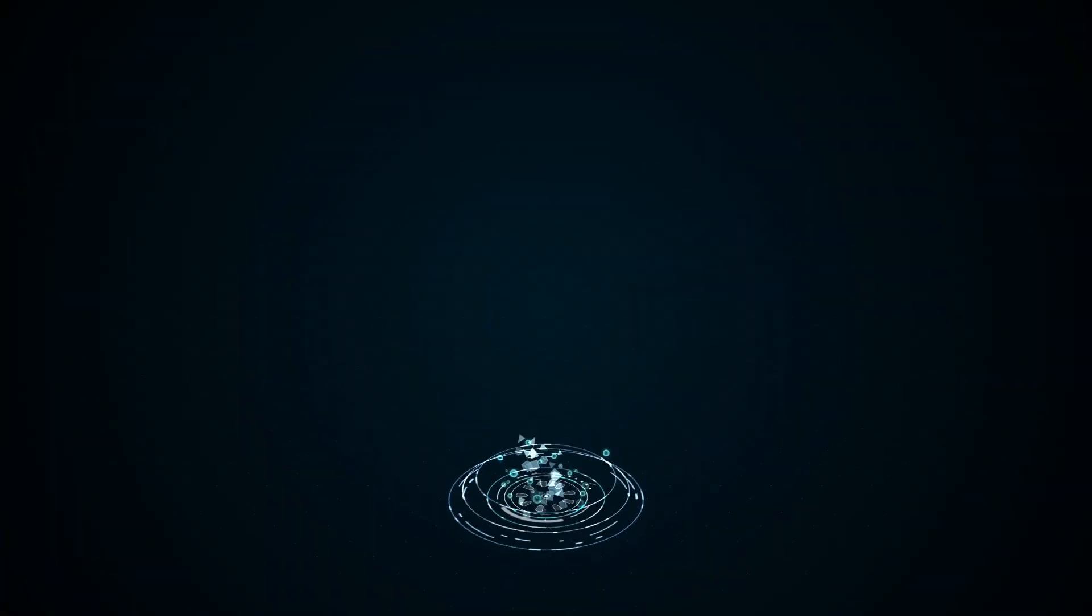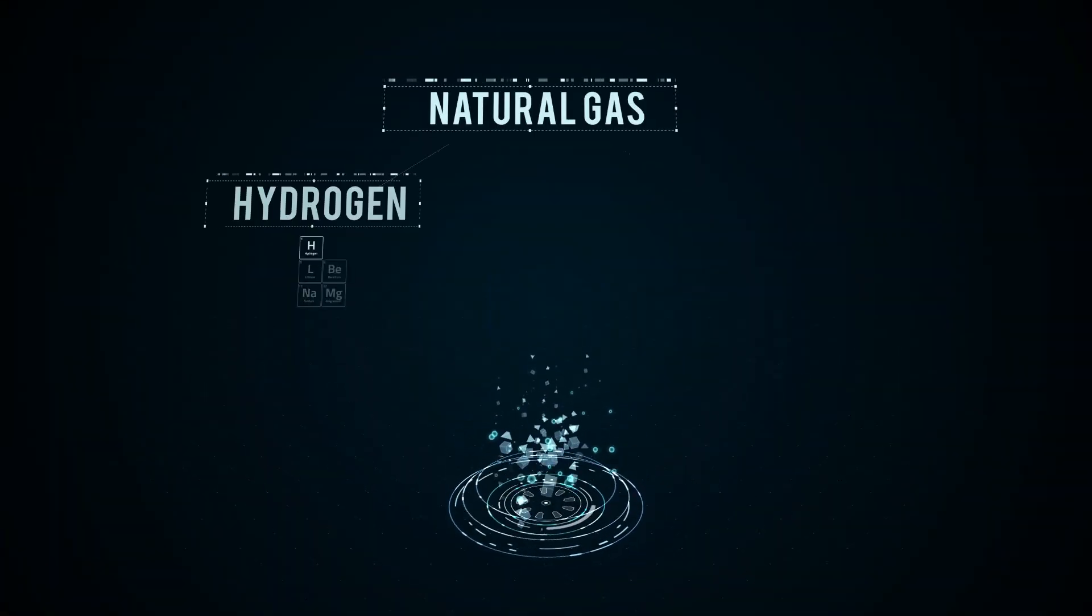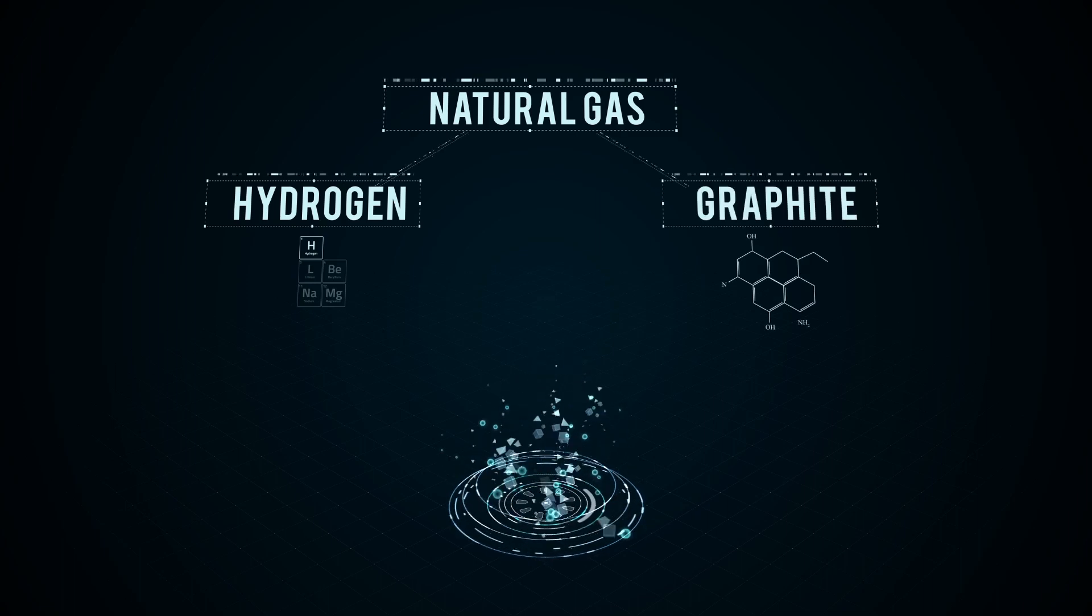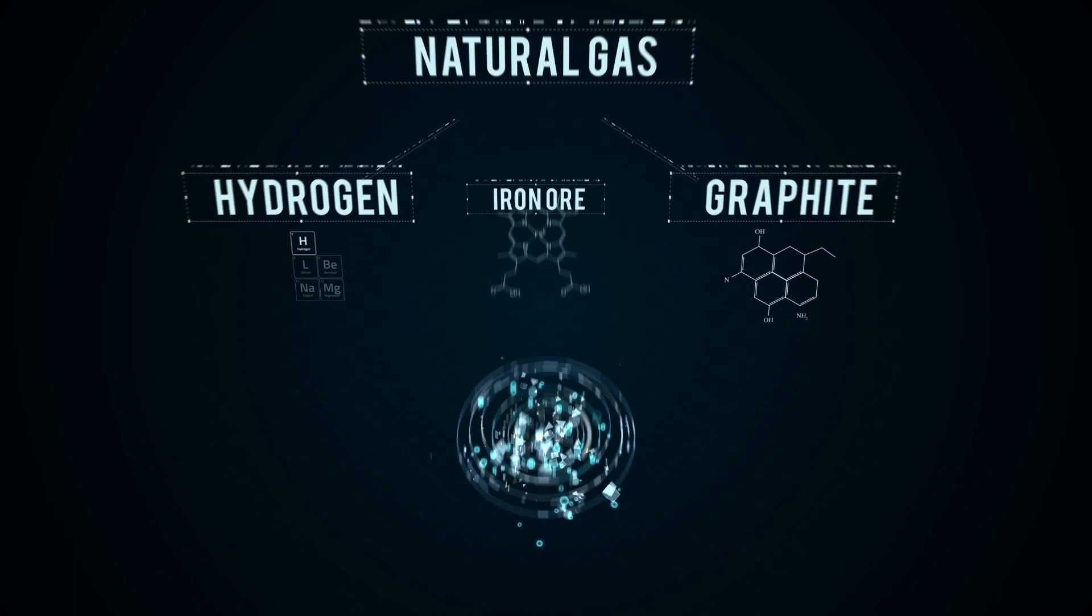The Hazer process enables the effective conversion of natural gas into hydrogen and high quality graphite using iron ore as a process catalyst.